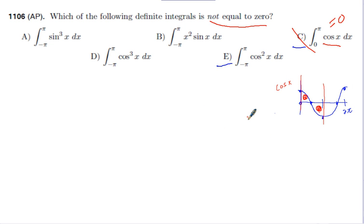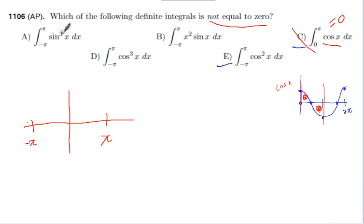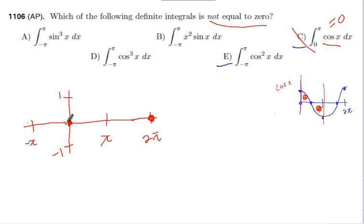Let's go back and look at A before we look at E, just to get another feel for this graph analysis. So sine cubed, and now we're interested from -π to π. Raising sine to the third power is really just going to stretch out the sine function. Its maximum value is still going to be 1 and its minimum value is still going to be -1. Sine starts at 0, repeats itself at 2π, is at 0 halfway between 0 and 2π, and is at its minimum and maximum at the midpoints.